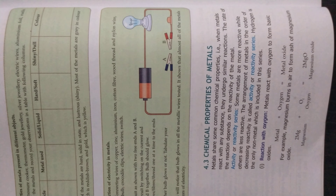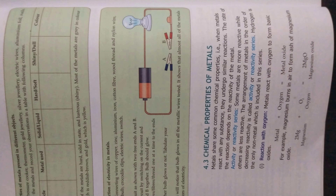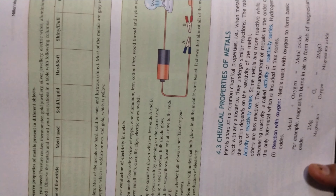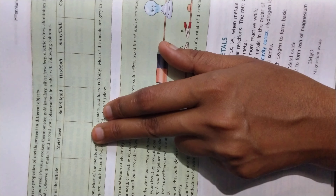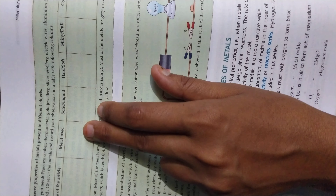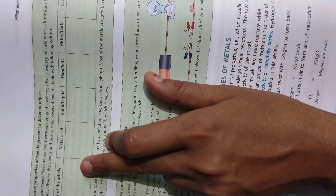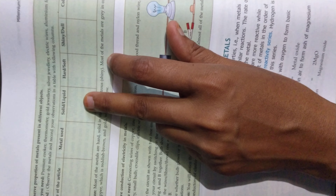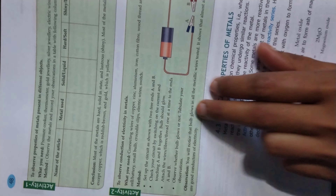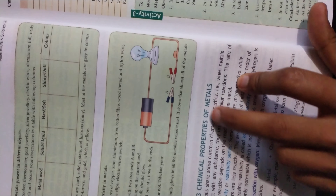Students, the next part of the chapter is chemical properties of metals. Before that, we have a table to fill in where you have to write down the name of different types of articles, the metals used in their formation, whether the article is solid or liquid, hard or soft, has a shiny or dull surface, and its color. For example, a pressure cooker — you have to write about these articles.